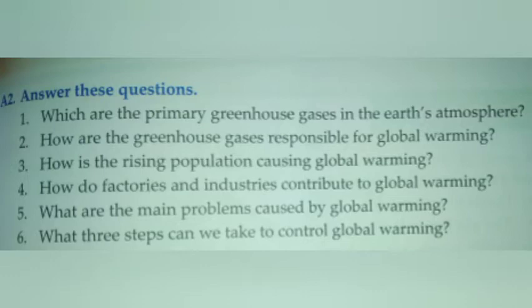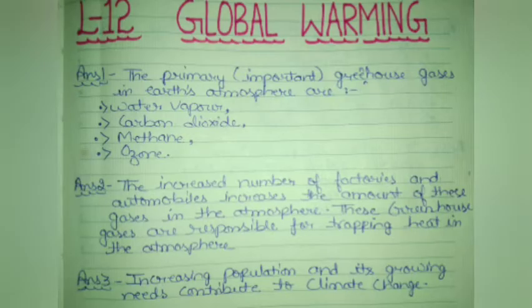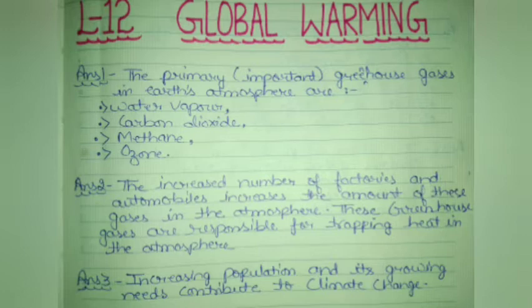Question number 1: Which are the primary greenhouse gases in the earth's atmosphere? The important greenhouse gases in the earth's atmosphere are water vapour, carbon dioxide, methane, and ozone.